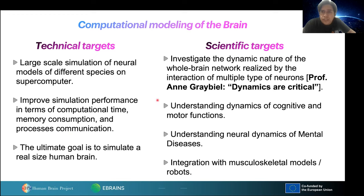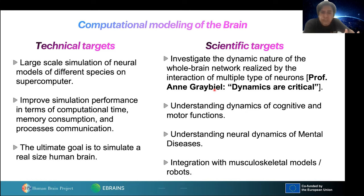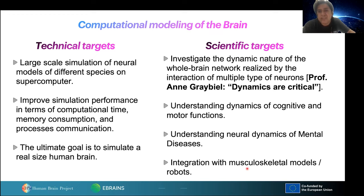Regarding scientific targets, we would like to investigate the dynamic nature of the whole-brain, which is realized by the interaction of multiple types of neurons. We want to understand the dynamics of cognitive and motor function, as well as mental disease. We also want to constrain the model more biologically for improving its results, and I think musculoskeletal model integration — co-simulation with other systems — is very important.